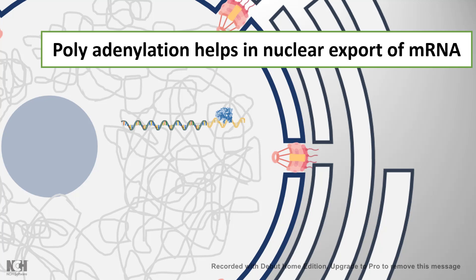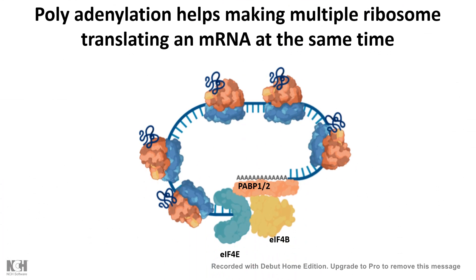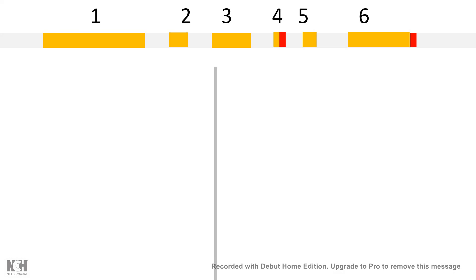In bacteria, the poly-A tail leads to mRNA degradation, but in eukaryotic cells the situation is completely different. The poly-A binding protein also interacts with translation initiation factors 4E and 4G. As the poly-A tail indirectly interacts with these initiation factors, the mRNA forms a closed-loop structure, which allows several ribosomes to be recruited simultaneously and increases the rate of translation.